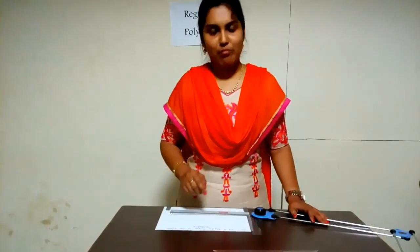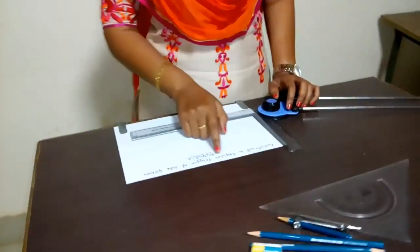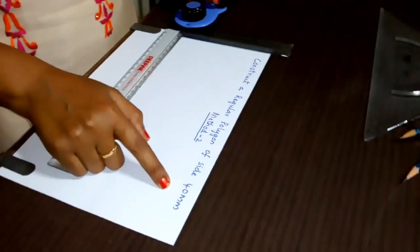Hello everyone, in this video I will show you the step-by-step procedure of drawing a regular polygon. In the previous video, I discussed the construction of a regular polygon using one method. In this video, we will see another method using a protractor and compass. Our objective is to construct a regular polygon of side 40mm.